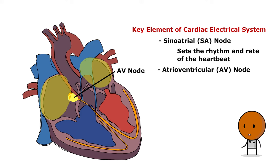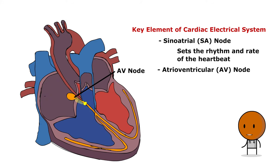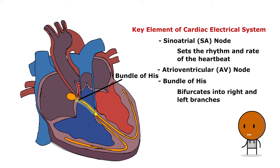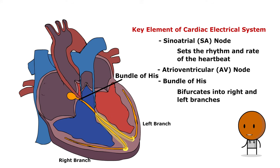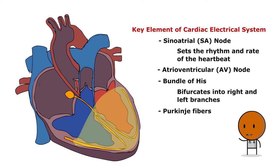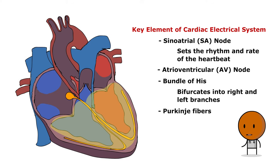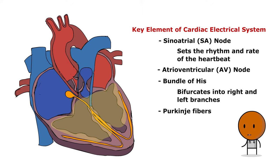From the AV node, the impulse moves to the AV bundle or bundle of His, which bifurcates into the right and left branches, guiding the impulses to the heart's apex. These impulses subsequently propagate through the Purkinje fibers, which spread extensively across the ventricle's inner muscular layer.